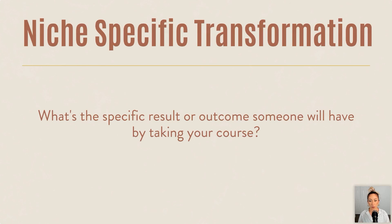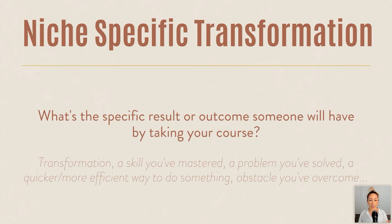What's the specific result or outcome someone will have by taking your course? Maybe your course idea doesn't have an obvious transformation — that's okay. Your course can teach a skill you've mastered that others want to learn, a problem you've solved, a quicker or more efficient way to do something, or an obstacle you've overcome. Whatever you're teaching, we want the outcome to be really specific so it targets the right person.